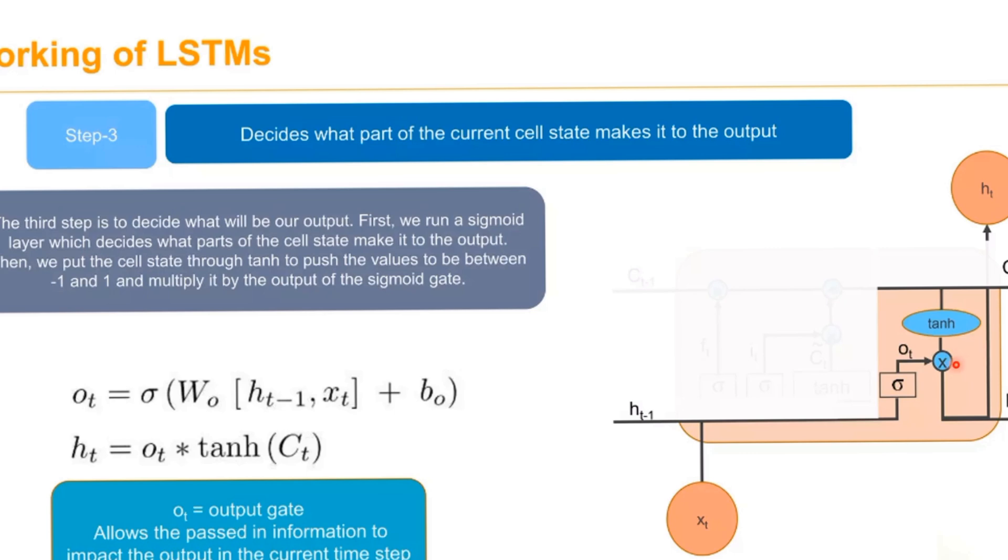Then we put the cell state through tanh to push the values between minus 1 and 1, and multiply it by the output of the sigmoid gate. This output gate O_t allows the past information to impact the output.